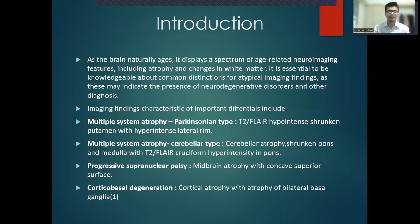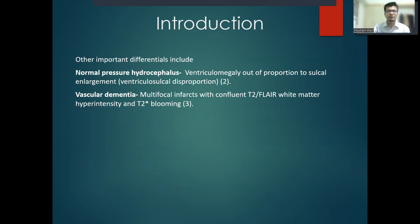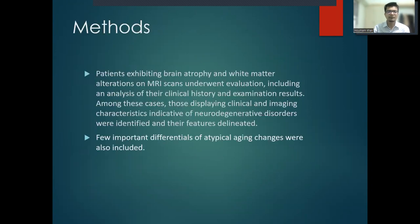Progressive supranuclear palsy shows midbrain atrophy with concave superior surface. Corticobasal degeneration shows cortical atrophy with atrophy of bilateral basal ganglia. Other important differentials include normal pressure hydrocephalus — ventriculomegaly out of proportion to sulcal enlargement, ventriculo-sulcal disproportion — and vascular dementia — multifocal infarcts with concomitant T2 FLAIR white matter hyperintensity and T2-star blooming artifacts.